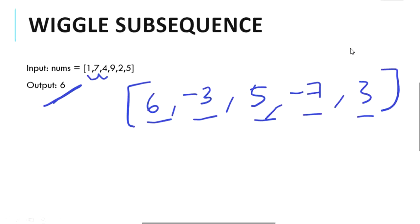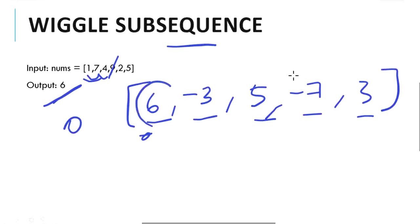The subsequences do not have to be continuous — they can ignore any numbers in between and consider the rest of the elements. The condition clearly states that the difference between any two numbers cannot be 0, and it satisfies the wiggle subsequence if and only if the differences are alternatively negative and positive. We have to compare the previous difference and current difference between every pair and come up with a solution.